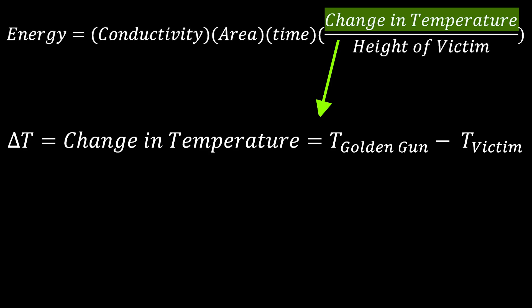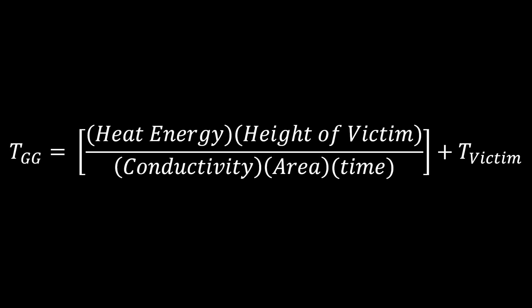As all Americans know, the average human temperature is 98.6 degrees Fahrenheit, or 37 degrees Celsius for the rest of the world. Which, in scientific units, is 310 degrees Kelvin. Next, with a little algebra, voila! We have solved for temperature of the golden gun.